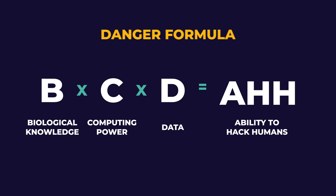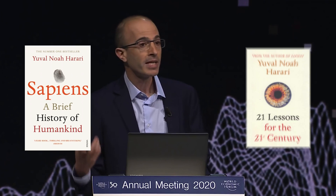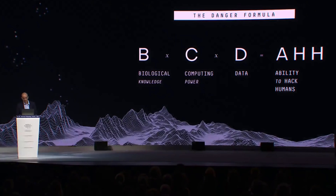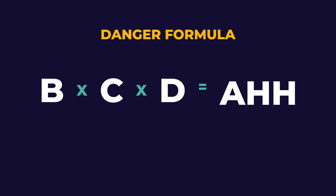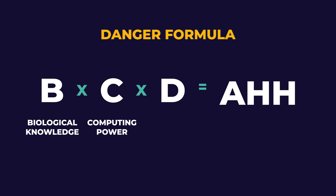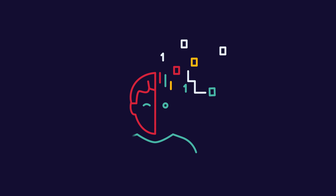We end on a scary note with Yuval Noah Harari's Danger Formula, presented at Davos. The formula is: B × C × D = AHH — biological knowledge multiplied by computing power multiplied by data equals the ability to hack humans. If you know enough about biology and have enough computing power and data, you can hack someone's body, brain, and life — understanding them better than they understand themselves. As we keep moving forward in this technological revolution, it might not just disrupt economics, philosophy, or politics — it might actually disrupt our biology. This could be the next frontier: threat or opportunity.